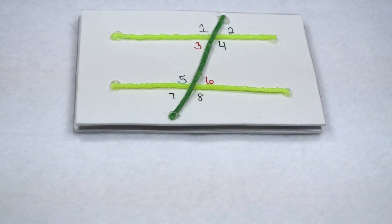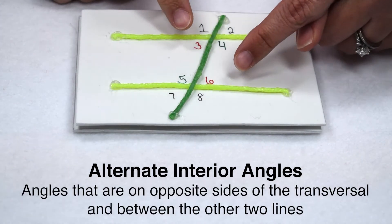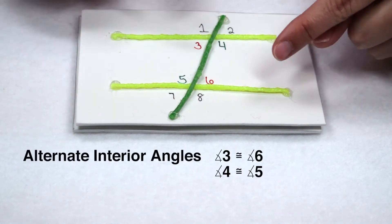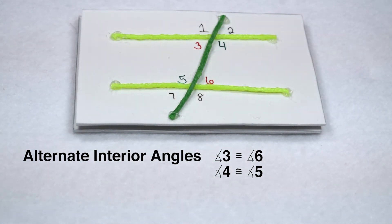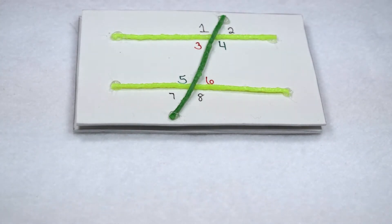Keeping our parallel lines and transversal, we have several other sets of congruent angles. One set would be alternate interior angles. Alternate interior angles are angles that are on opposite sides of the transversal and fall within our parallel lines. So angle 3 and angle 6 would be one set of alternate interior angles, and angle 4 and angle 5 would be our other set of alternate interior angles.